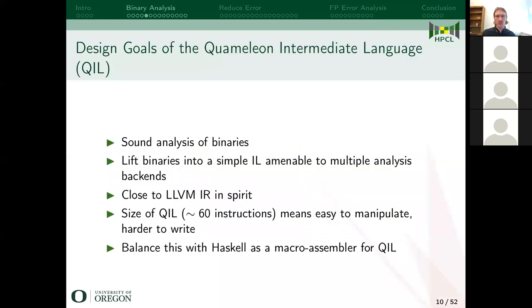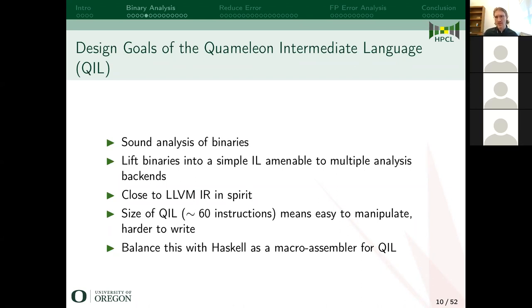Some of the design goals of the Chameleon intermediate language, which we call QUIL, is that the main goal is sound analysis of binaries. Soundness means you have no false positives — contrast this with a linter that might give you a spurious warning. The goal of Chameleon is to lift binaries into a simple IL that can be used for multiple analysis backends. This is similar to LLVM's design goal of supporting multiple architectures. The size of QUIL is about 60 instructions, which makes it easy to manipulate.